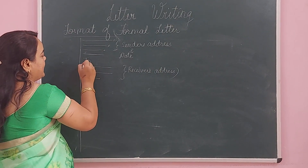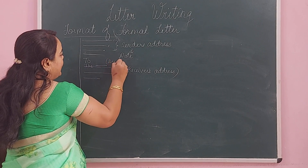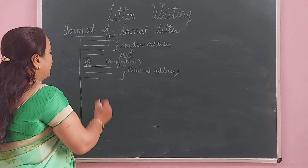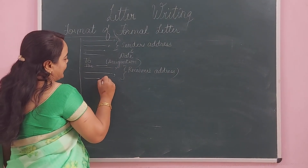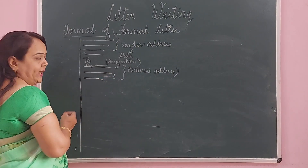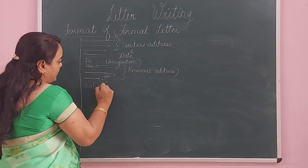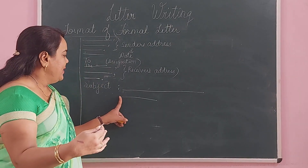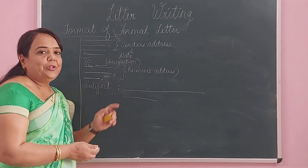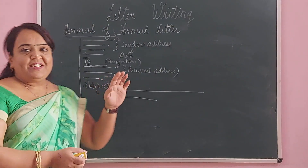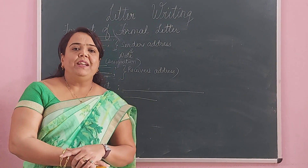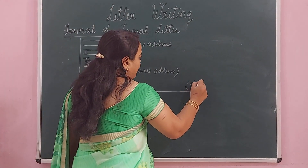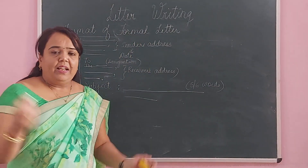When writing the receiver's address, the first line is 'To the' followed by the designation — meaning the post, such as 'To the Principal,' 'To the Manager,' or 'To the Editor' — then the address and place. You are not expected to write the date here. After that, you write the subject, which should be short — five to six words — and clear on the paper. The subject is usually given in the question itself; for example, 'Complaint regarding garbage collected in the area.' You can use the word 'regarding' and continue.